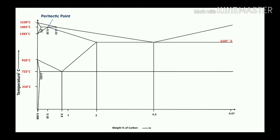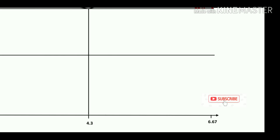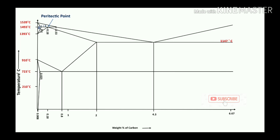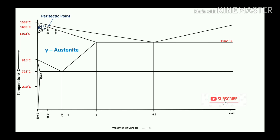Starting with the peritectic point: peritectic means liquid plus solid converts into a new solid. In the case of the iron-carbon diagram, liquid plus delta iron is involved. According to the solubility at higher temperature, carbon forms delta. So here delta plus gamma: liquid plus delta converts into 100% new solid, representing gamma austenite.